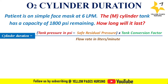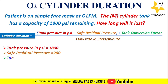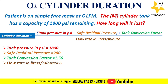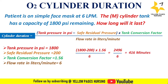Tank pressure in PSI is 1800, safe residual pressure is 200, tank conversion factor for the M-cylinder is 1.56, and flow rate in liters per minute is 6. Applying all values into the formula, we get the answer: 416 minutes. Converting this to hours, we get 6 hours and 56 minutes.